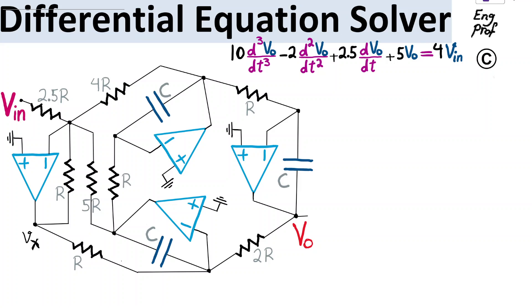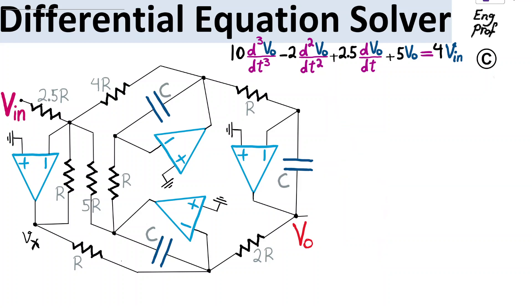In the op-amp circuit example shown here, implemented using four ideal op-amps, we want to quickly analyze and show that it actually solves this third-order differential equation. How is this possible and how quickly can we solve this?